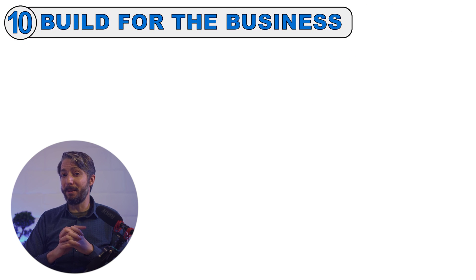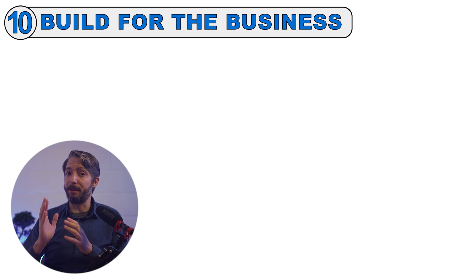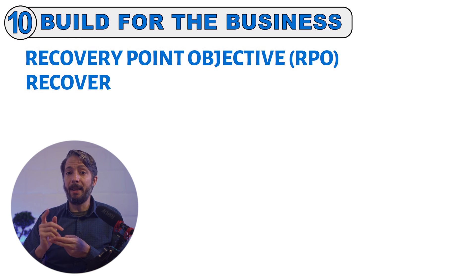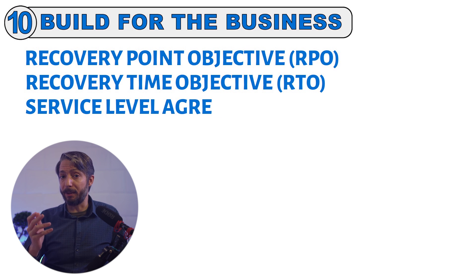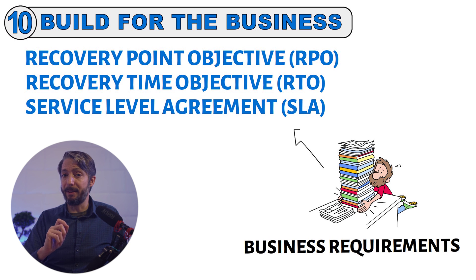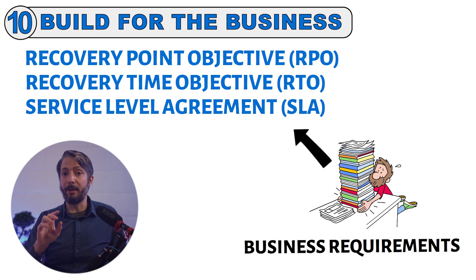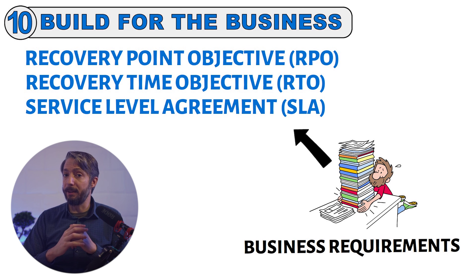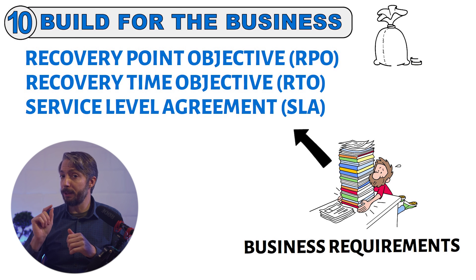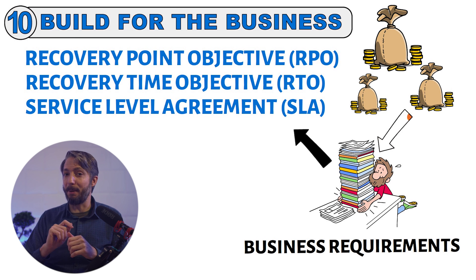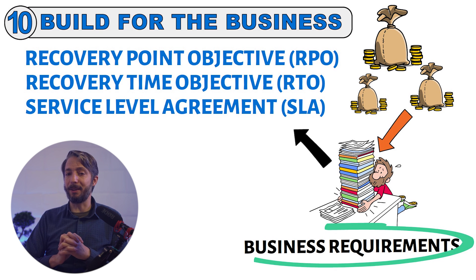This brings us to the final point, number 10: always build for the needs of the business. Despite being the last point, it is the fundamental building block for everything. The RPO, RTO, along with the service level agreement and service level objectives required by the business, have to be defined. Based on these requirements, you can architect a solution with the necessary components, including availability. After all, using resources in the cloud always comes at a cost, and these costs have to be backed up by a solid business requirement.